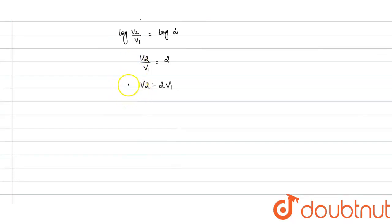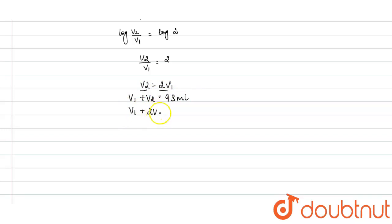Total volume V₁ + V₂ = 93 mL. Substituting V₂ = 2V₁ gives V₁ + 2V₁ = 93, so 3V₁ = 93, and therefore V₁ = 31 mL.